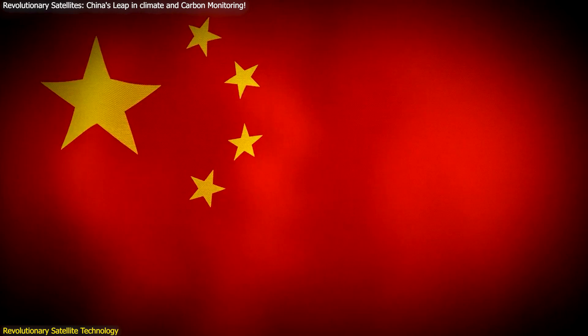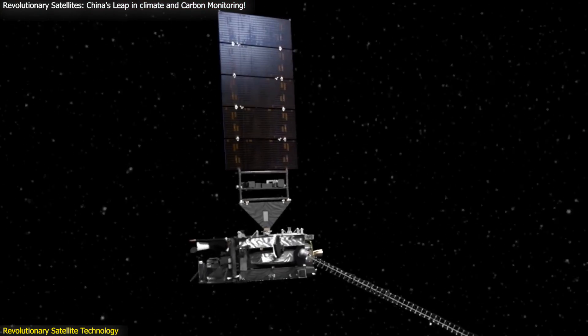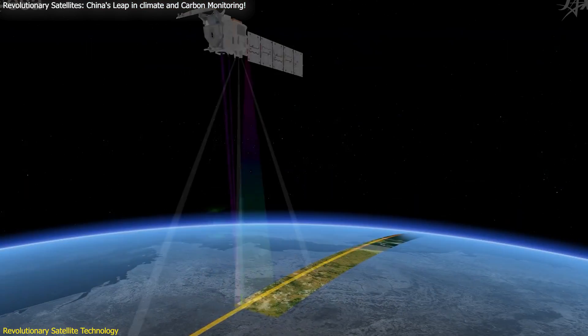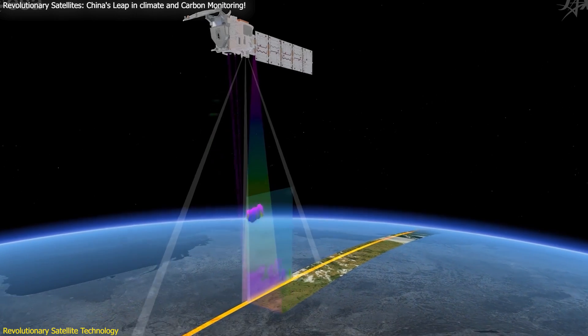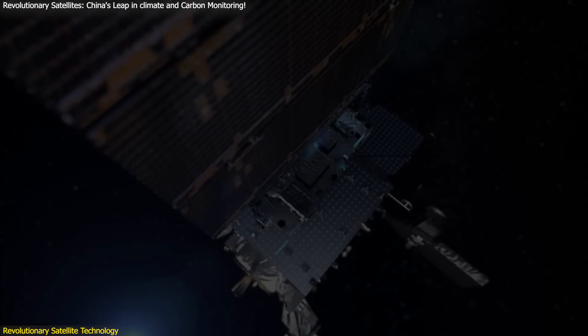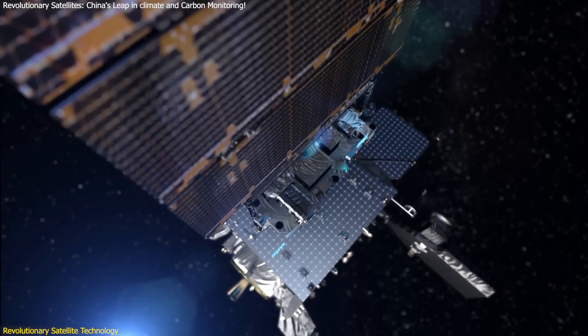China has launched two pioneering satellites, the Atmospheric Environment Monitoring Satellite and the Terrestrial Ecosystem Carbon Monitoring Satellite, also known as Gumong. These satellites represent a significant leap in technology and capability.